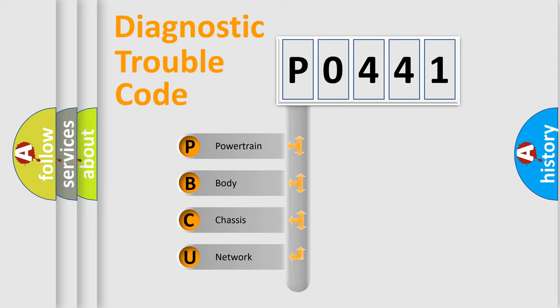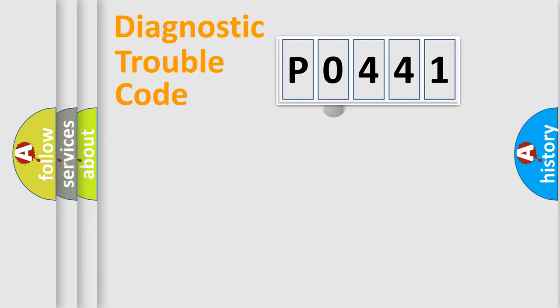We divide the electric system of automobile into four basic units: Powertrain, Body, Chassis, Network. This distribution is defined in the first character code.